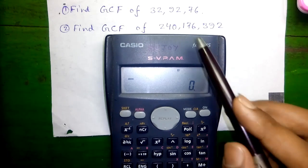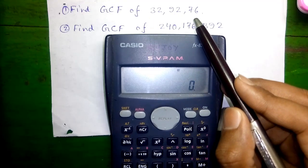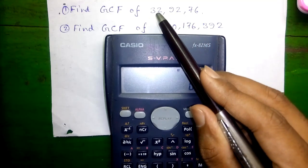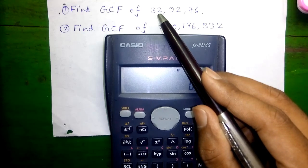First we will find GCF of 32, 92 and 76. So first we will divide the largest number by the smallest number. So we will divide 92 by 32.